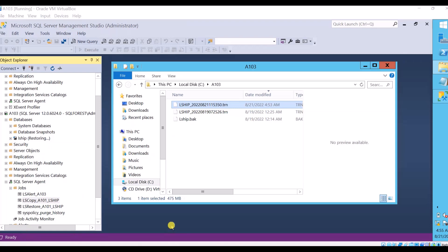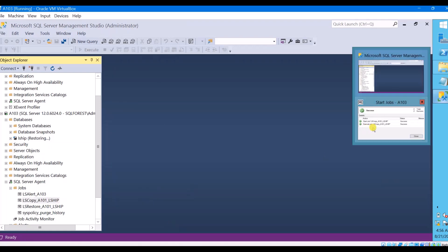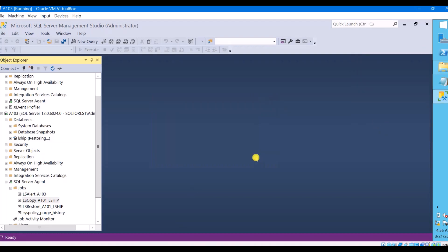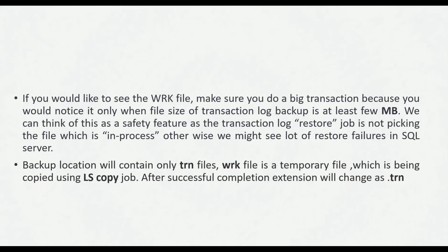The copy job is now completed successfully. While the copy job is in progress, the file is copied with the .wrk extension. The .wrk file often goes unnoticed because generally transaction log backups are very small in production servers. But if you want to see the .wrk file, you have to make a large transaction and then you would notice it while the copy job is in progress. At the backup location, files will contain only the .trn extension. The .wrk file is a temporary file being copied using the log shipping copy job, and after successful completion it changes to .trn extension.